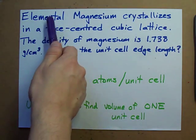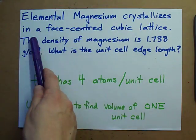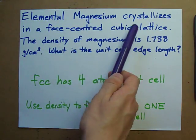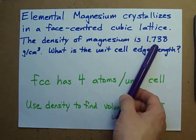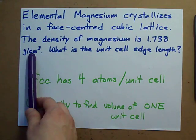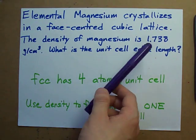This question asks, if elemental magnesium crystallizes in a face-centered cubic lattice and the density of magnesium is 1.738 grams per centimeter cubed, what is the unit cell edge length?